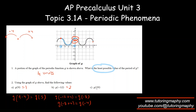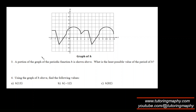For g of 29, I subtract multiples of 4. Counting: 4, 8, 12, 16, 20, 24 — subtracting 24 gives g of 5, and g of 5 is 1. Alternatively, subtracting 28 gives g of 1, which is also 1. So g of 29 equals 1.